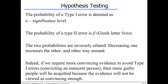In hypothesis testing, the probability of type one error — rejecting the true null hypothesis — is called the significance level, and we use the Greek letter alpha for that. There is another chance that type two error will happen, and the probability of that is denoted by the letter beta. These two probabilities are inversely related: if the probability of type one error goes up, the probability of type two error goes down, and vice versa.